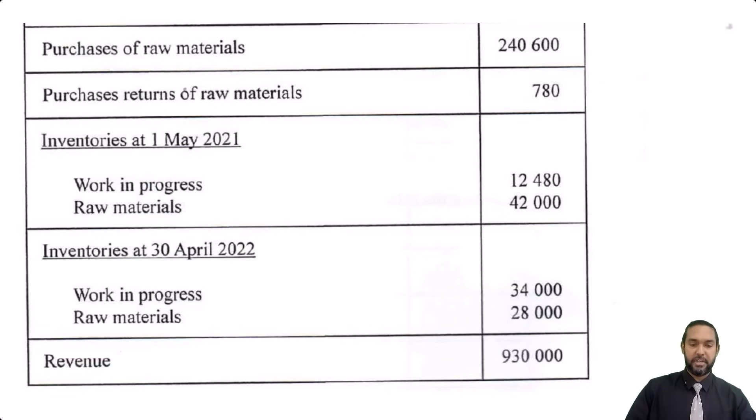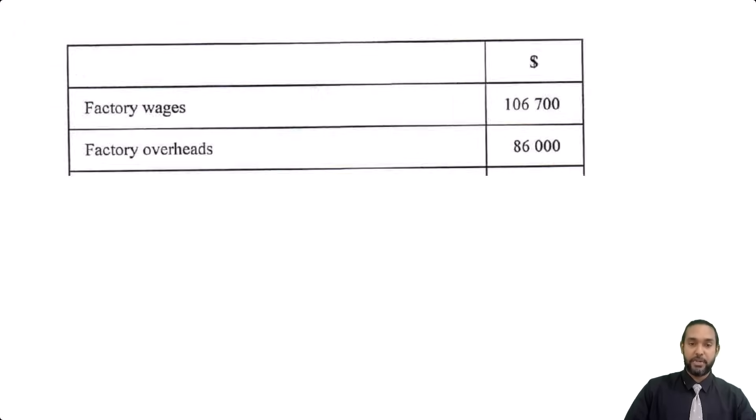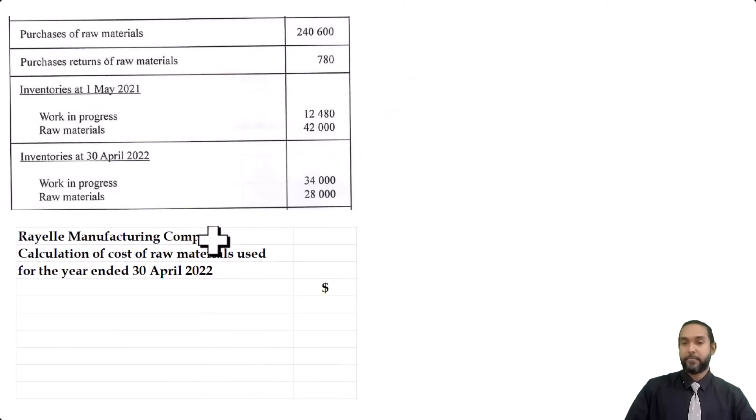So the first thing they want us to do is to use the information provided in the table on page 14 to prepare an extract showing the calculations to arrive at the cost of raw materials used for the year ended 30th April 2022. Okay, let's take a look at the information. So again, I headed up my stuff because they gave you a table this time, with space to put a heading. Put your heading. It attracts a mark or at least a half mark.